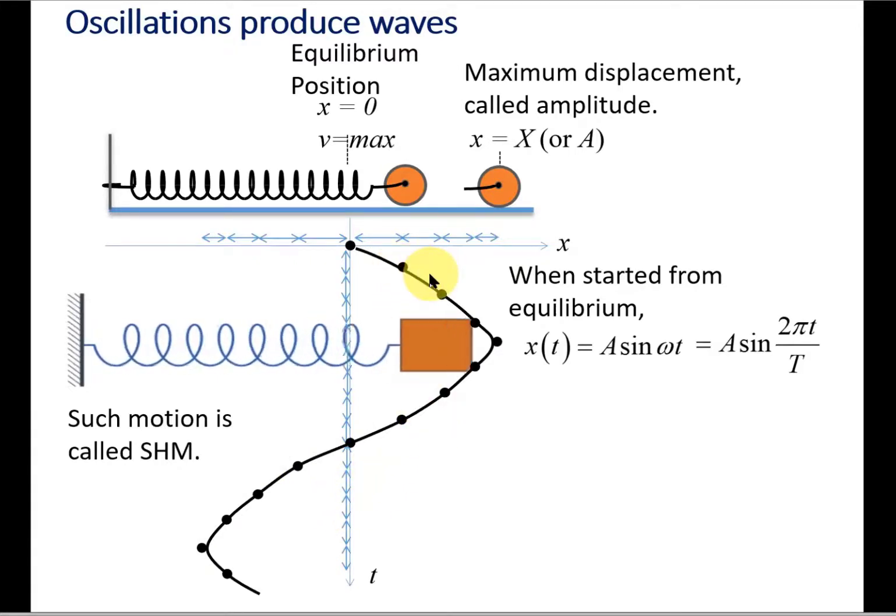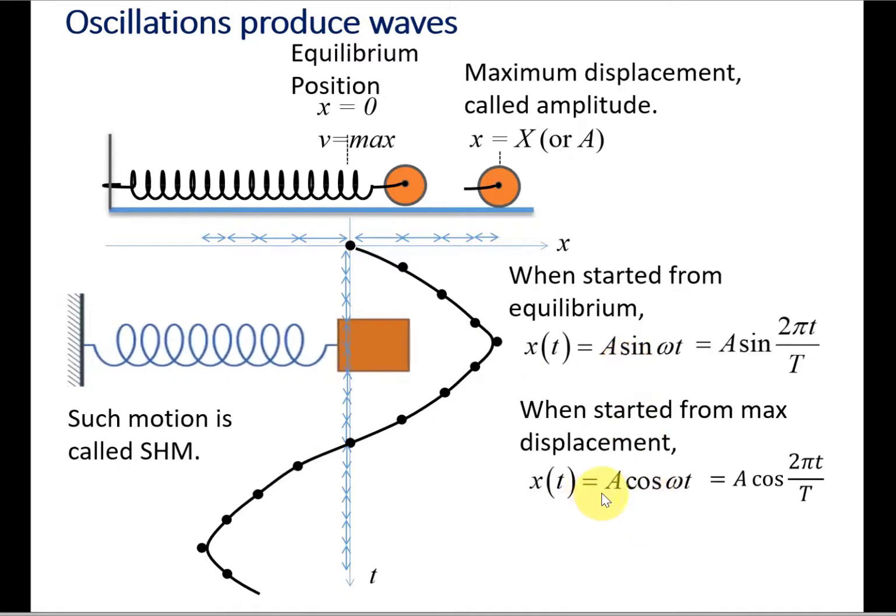When we start looking from the equilibrium position, it becomes a sine function where T is the period of oscillation, the time it takes to complete one oscillation. When we start from the maximum displacement position, it starts from here, so it looks like a cosine function.